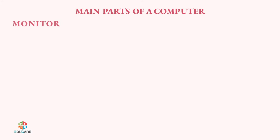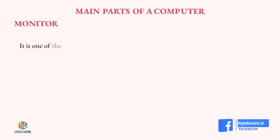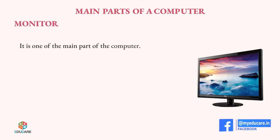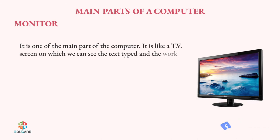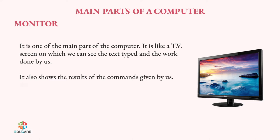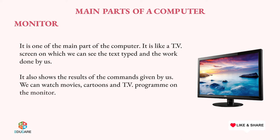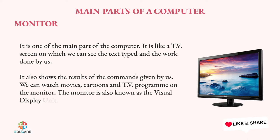Main Parts of a Computer — Monitor. It is one of the main parts of the computer. It is like a TV screen on which we can see the text typed and the work done by us. It also shows the results of the commands given by us. We can watch movies, cartoons and TV programs on the monitor. The monitor is also known as the Visual Display Unit.